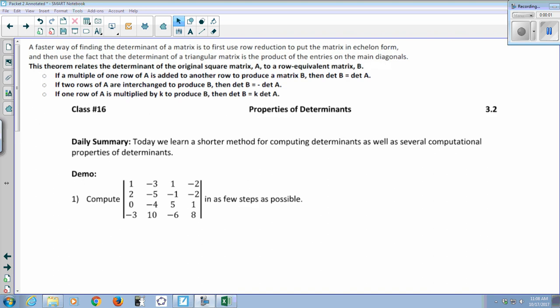So a faster way of finding the determinant of a matrix, this is the 3-2 shortcut, is to first use row reduction to put the matrix in echelon form, and then use the fact that you just discovered in your activities that the determinant of a triangular matrix is the product of the entries on the main diagonal, which is upper left to lower right.